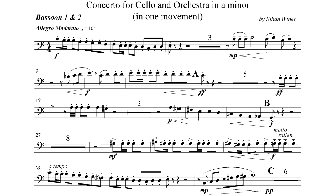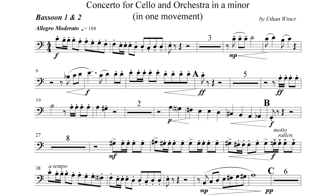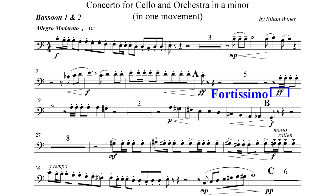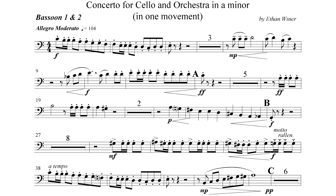The second instruction is mezzo piano, abbreviated MP — this means medium soft because the Italian for soft is piano, and mezzo is the word for medium. There's also mezzo forte, abbreviated MF, which means medium loud. Finally, fortissimo and pianissimo mean very loud and very soft, respectively. Italian is the standard language used for written music instructions, and all classical musicians know at least the most common Italian musical terms and abbreviations.